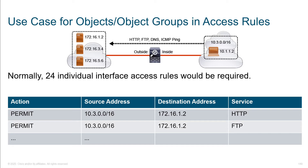A use case for object groups: I've got a subnet on the inside — 10.3.0.0/16 — as well as an individual host outside that scope, 10.1.1.2. I want to create a rule that says these devices are allowed to access particular destination servers. Based on the servers' IP addresses, we can't easily group them into a range since they're not all part of the same subnet. If you wanted to create a rule set encompassing all this, you'd be looking at about 24 individual lines. But if we take a little time to lay out our object groups, we can make our access list only one line.